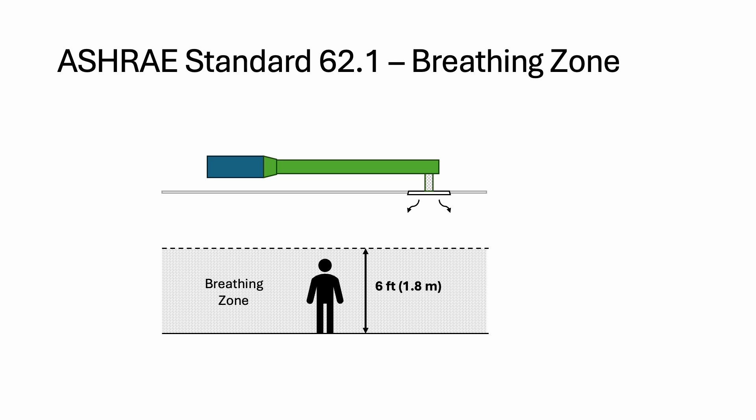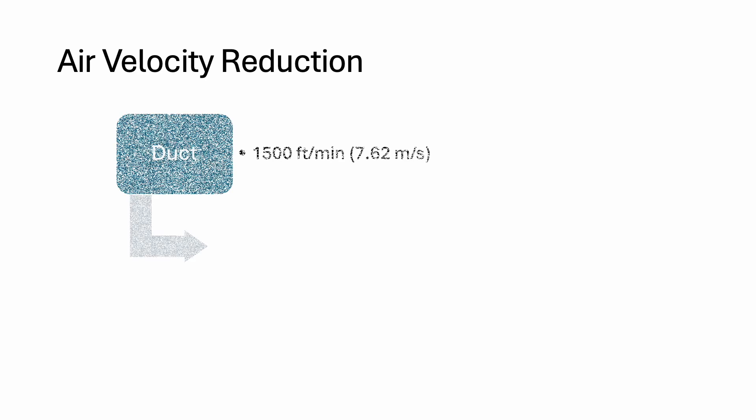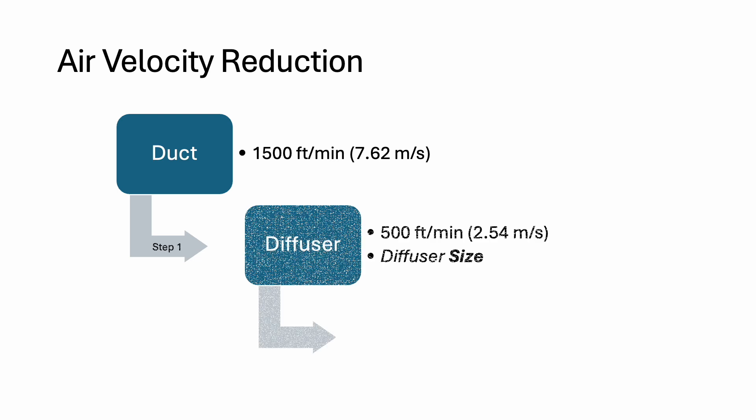Obviously, the velocity is not reduced immediately — there are two steps to this process. First, the diffuser must reduce the air velocity from 1500 to 500 feet per minute. This is done by selecting the right diffuser size.